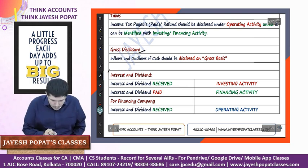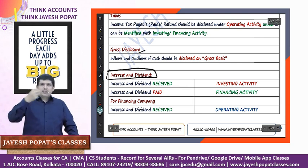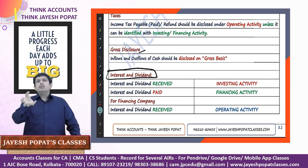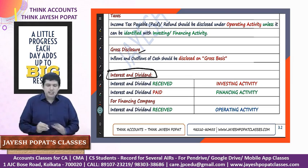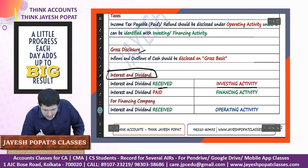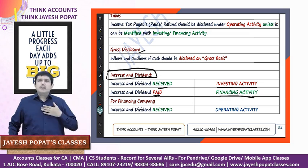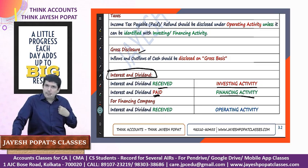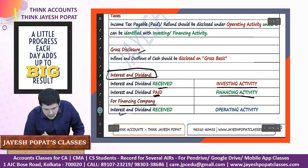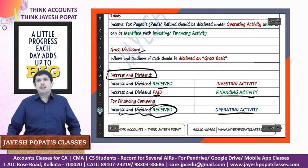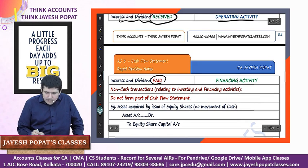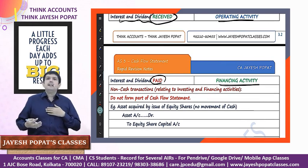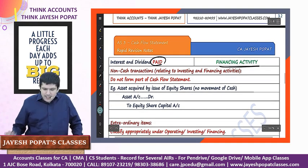Interest and dividend received is on our investments, so it falls under investing activity. Interest and dividend paid is on loans or shares issued, so it falls under financing activity. However, if the major business is of a financing nature - such as a financing company - then interest and dividend received becomes an operating activity because it is part of the company's operations. But interest and dividend paid will still remain a financing activity, as it is paid on borrowings and shares which are part of the financing of the company.